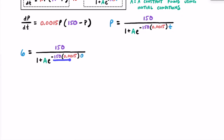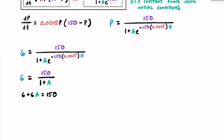If we evaluate, this entire exponent becomes 0, and e to the 0th power is equal to 1. So 1 times A is just A. That means we can write 6 equals 150 over 1 plus A. If we multiply both sides by 1 plus A, we get 6 plus 6A on the left side, and 150 on the right side. Then subtracting 6 from both sides and dividing both sides by 6, we find that A is equal to 24.